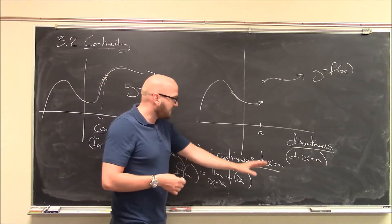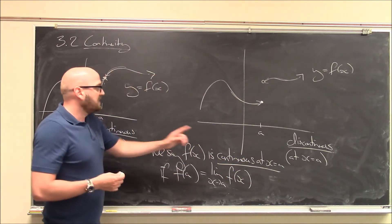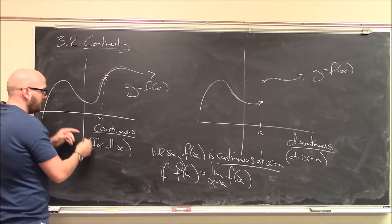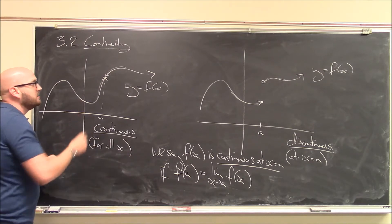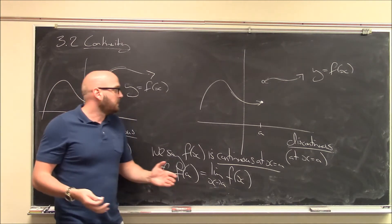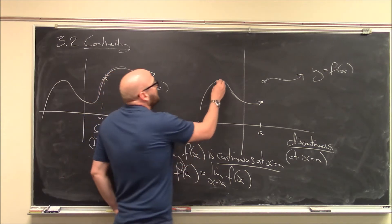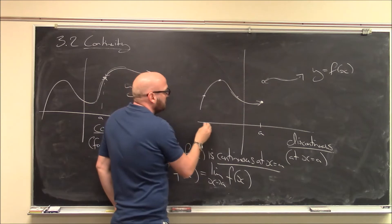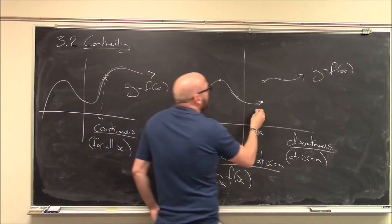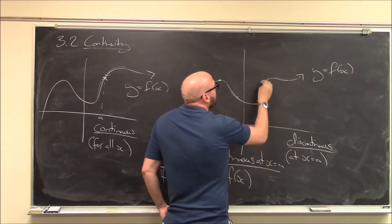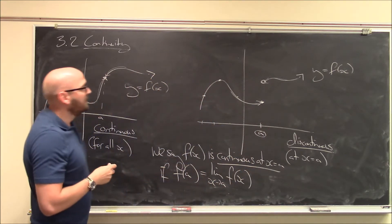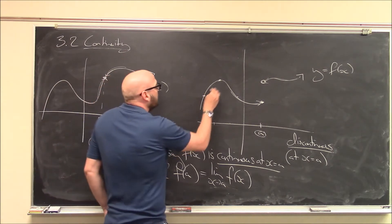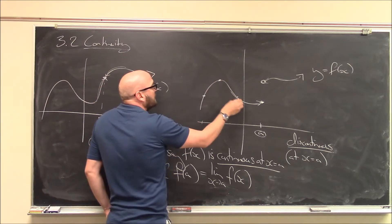That's continuity at a single point. When we talk about continuity over entire intervals, it just means that the function is continuous at every single point in that interval. So that's why I can talk about my function being continuous along these stretches, but it fails to be continuous at x equals a because the limit doesn't exist at that point. But for all these other points, the function value does actually equal the limit.